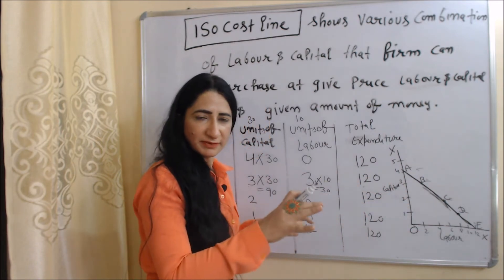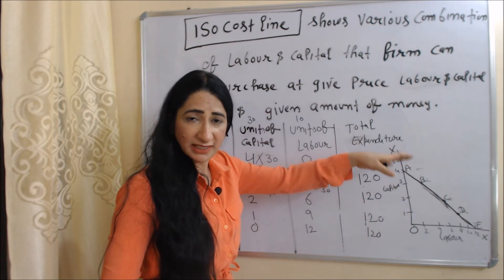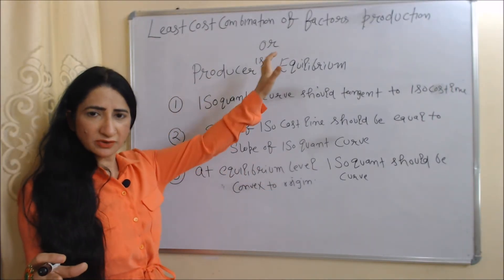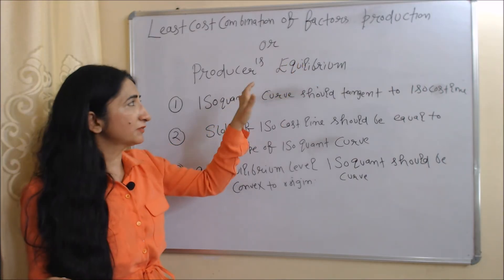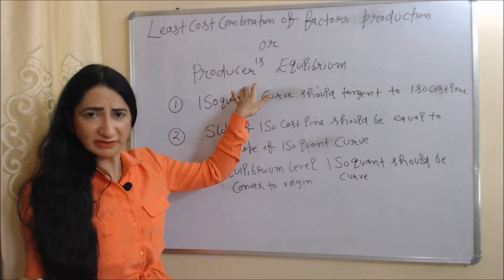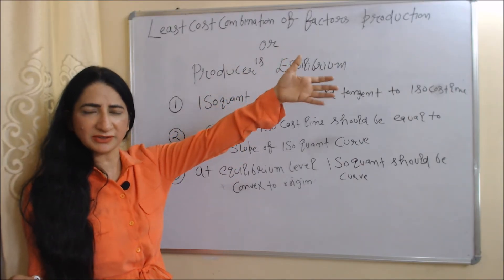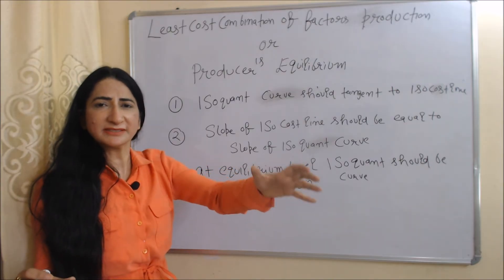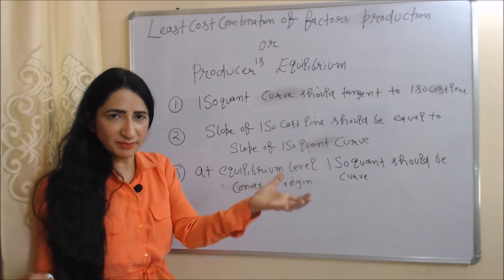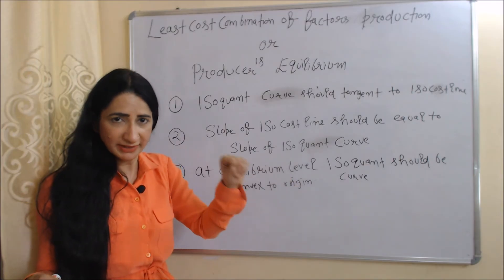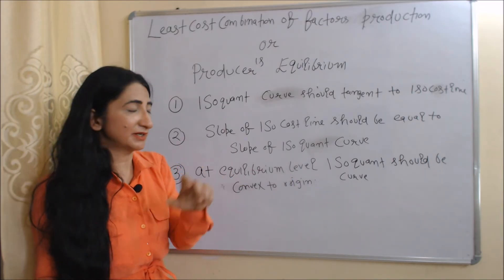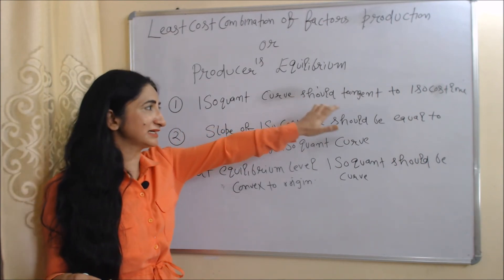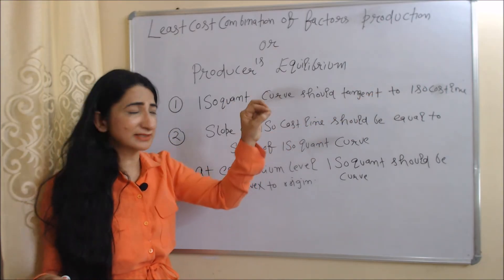Now we are going to talk about the least cost combination of factors of production, also called producer's equilibrium. Producer's equilibrium tells us how a producer can get maximum profit within their cost limit. There are three conditions: first, the isoquant curve should be tangent to the iso cost line at the equilibrium level.